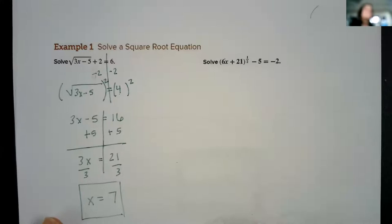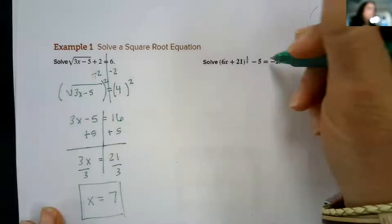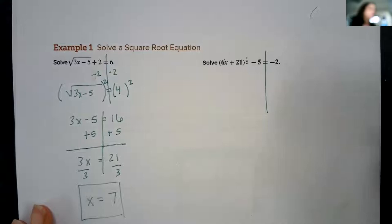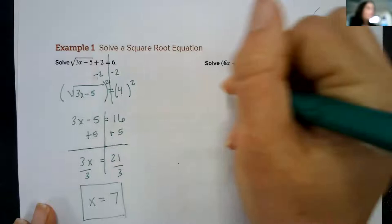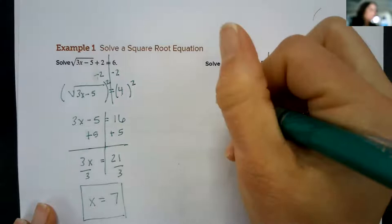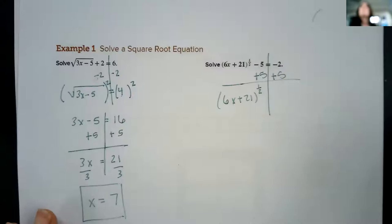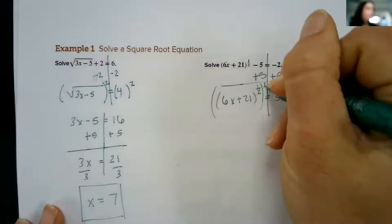Let's try another one. Isolate the radical. Now this one is a rational root. We've learned that that can be rewritten as a square root. It's a half power, same thing as a square root, so not a big deal. Let's just solve this. Isolate that rational exponent. We have (6x + 21) to the one half. You could change that to a square root if you want, and it's not going to bother me though.